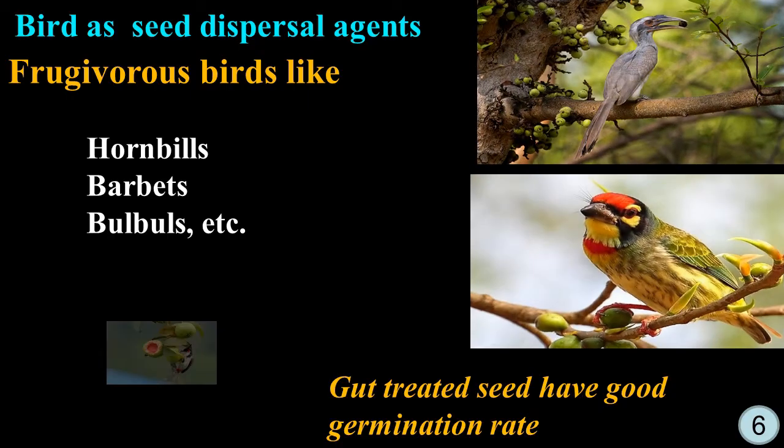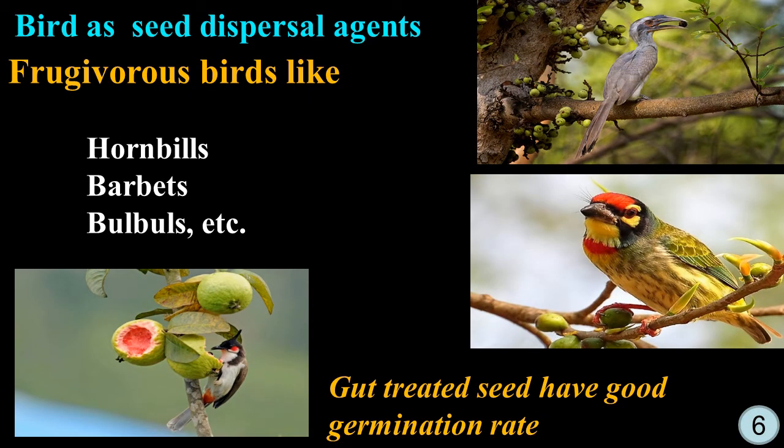Now we are moving towards an important aspect — the significance of birds. Fruit-eating birds like hornbills, barbets, and bulbuls spread seeds from one place to other places. Interestingly, gut-treated seeds have more germination capacity.